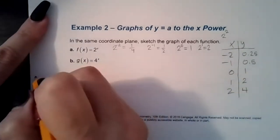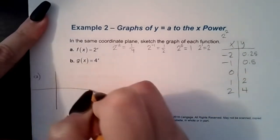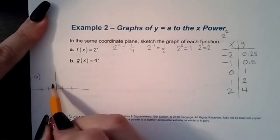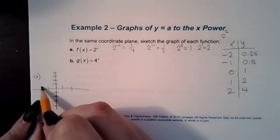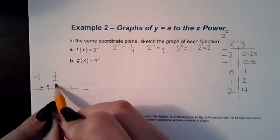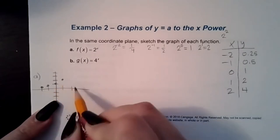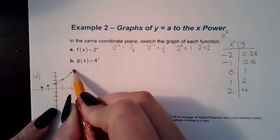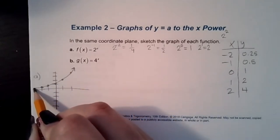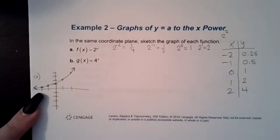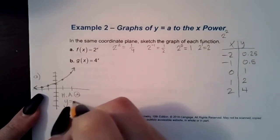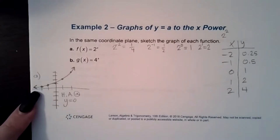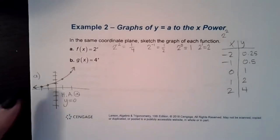Plotting those points for f(x) = 2^x: (−2, 0.25), (−1, 0.5), (0, 1), (1, 2), (2, 4). The graph curves upward. It has a horizontal asymptote at y = 0, so the left side of the graph will not touch the x-axis — it gets really close as it goes further left, but never touches.